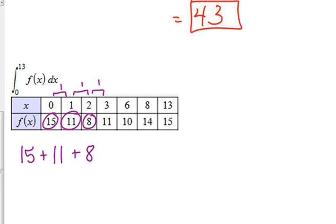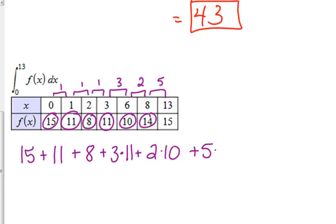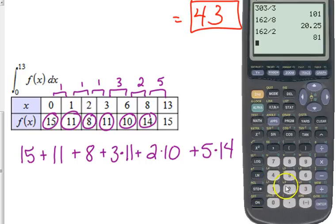Now I've got a width of 3 and a height of 11. Width of 2, height of 10. Width of 5, height of 14. Now these are some bigger numbers, so I'm going to use my calculator.